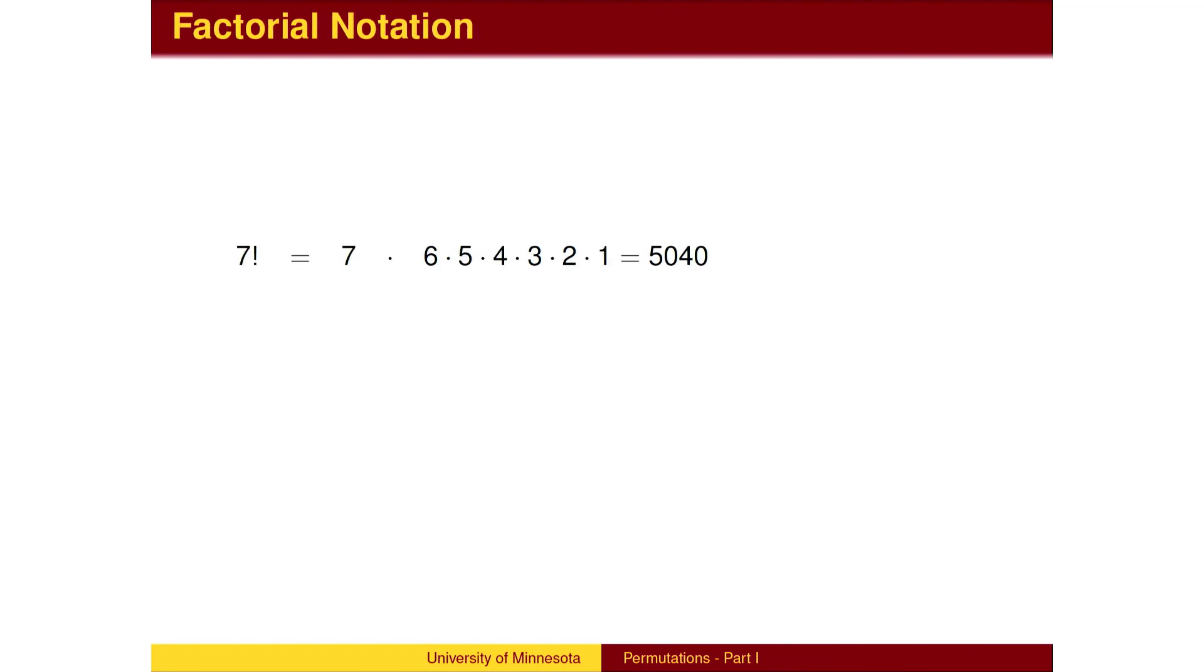Since this process will be used often, it will be useful to have a shortcut notation. This notation is called factorial notation. Seven followed by an exclamation point is read seven factorial.